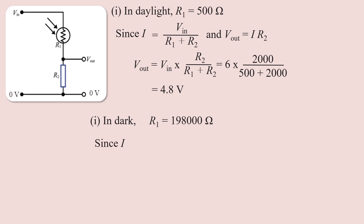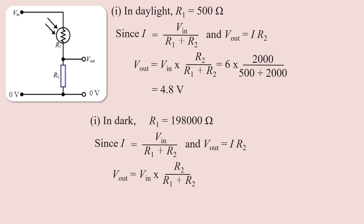Using the formula: current I equals V_in divided by R1 plus R2, and the voltage across R2 equals V_in multiplied by R2 divided by R1 plus R2. Substituting the dark resistance value, the voltage across R2 is approximately 0.06 volts.